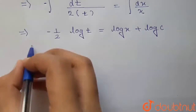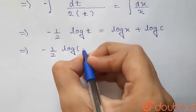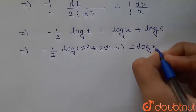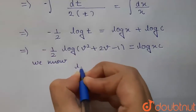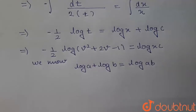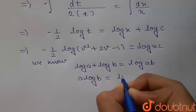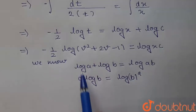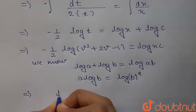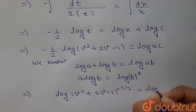Now putting back t = v² + 2v − 1, we get −(1/2)·log(v² + 2v − 1) = log(xc). Using the log property a·log b = log(b^a), this becomes log(v² + 2v − 1)^(−1/2) = log(xc).